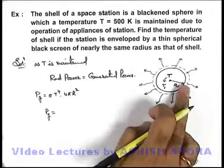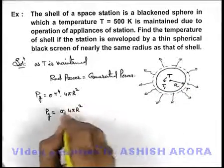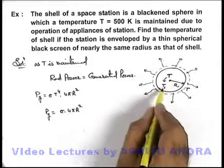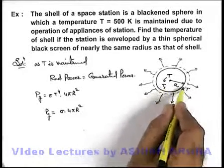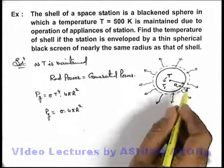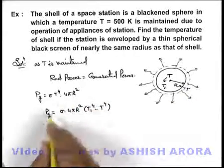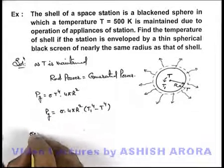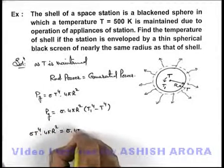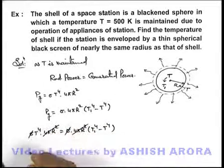We can state that generated power is equal to the radiated power. The net radiated power can be directly given as sigma into four pi r squared. If we talk about the space station, it will be radiating power proportional to T₁ to the power four and absorbing power from the envelope as sigma A T to the power four. This must be given as T₁ to the power four minus T₂ to the power four. As generated power remains the same, substituting the value: sigma T⁴ into four pi r squared equals sigma into four pi r squared times (T₁⁴ minus T₂⁴). Sigma and four pi r squared cancel out.